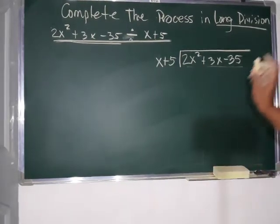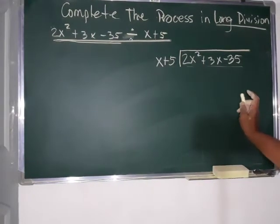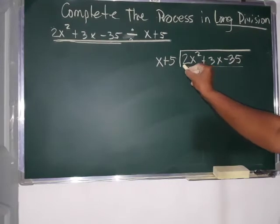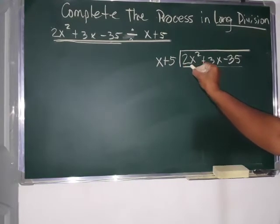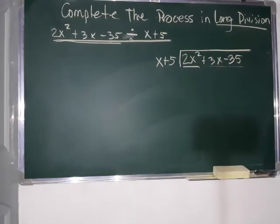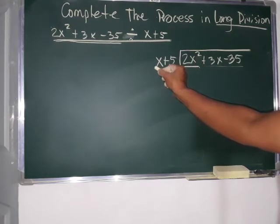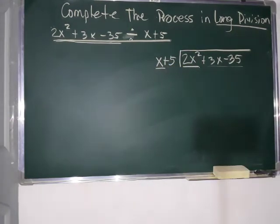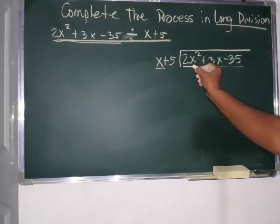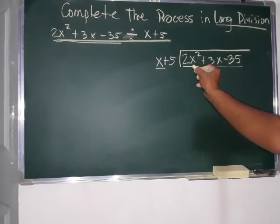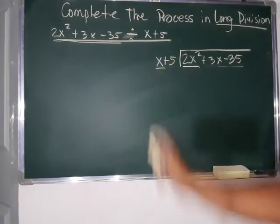Okay. Next, our first step is, we're going to divide the first term in our dividend with the first term with our divisor. Okay, divide first term of the dividend to the first term of the divisor.